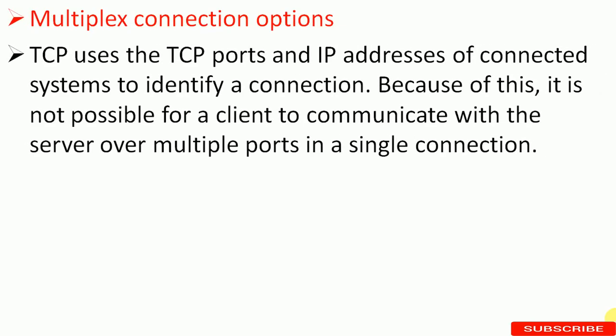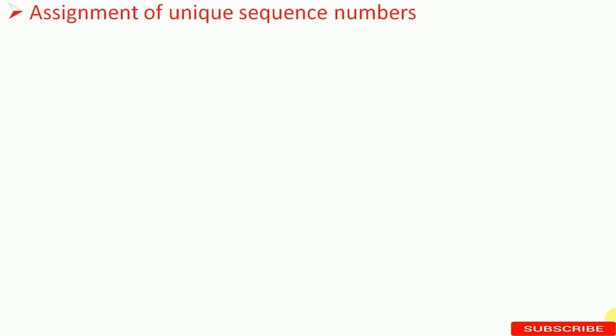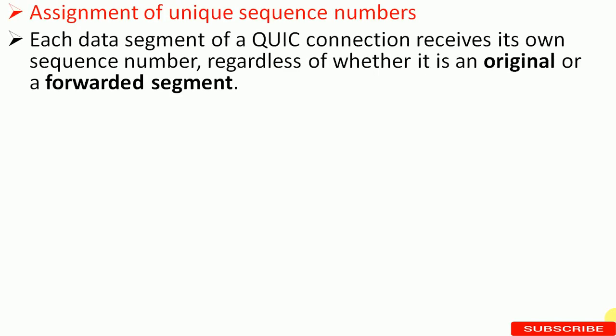TCP uses TCP ports and IP addresses of connected systems to identify a connection. Because of this, it is not possible for a client to communicate with the server over multiple ports in a single connection. The QUIC protocol solves this in a different way — it uses a 64-bit connection ID and various streams to transport data within a connection. Therefore, a QUIC connection is not necessarily bounded to a specific port, IP address, or endpoint. You can clearly see the difference: in TCP there is a predefined port you need to make the connection on, but QUIC removes that limitation.